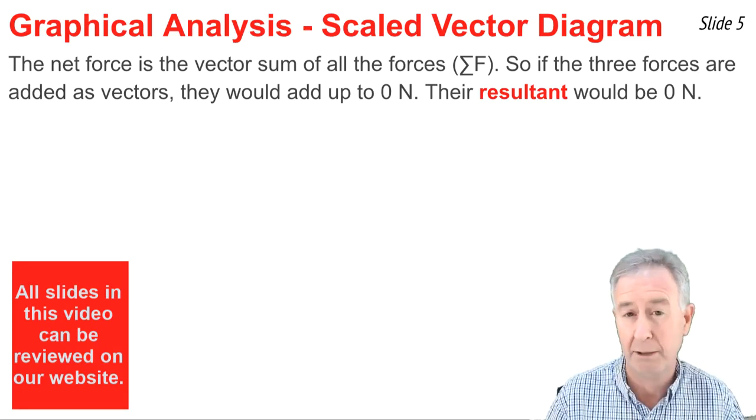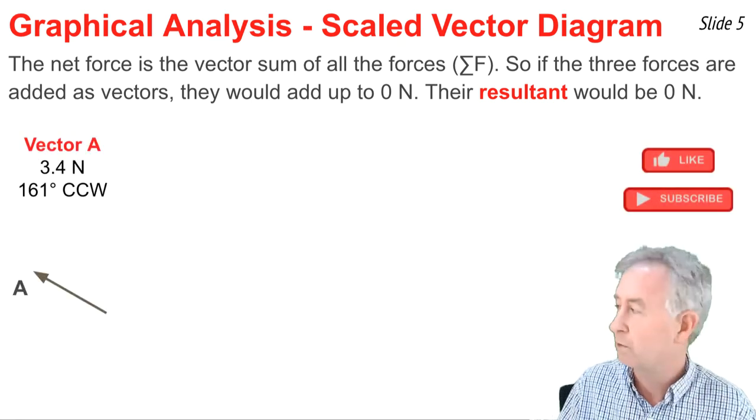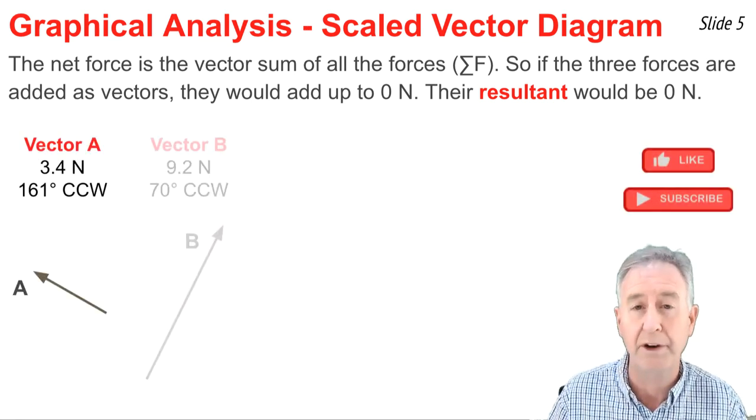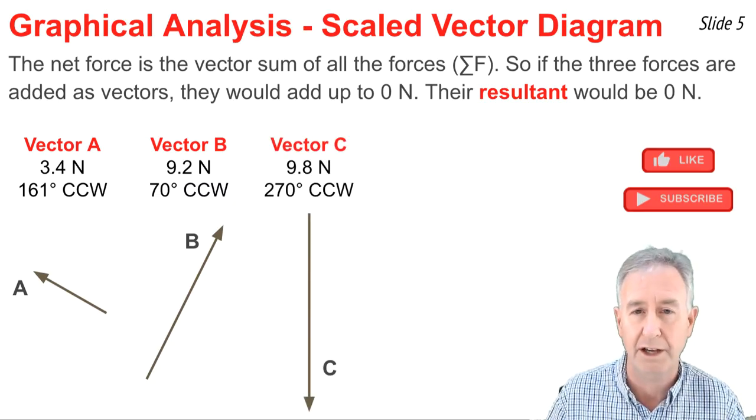That is, the vector sum or resultant of A plus B plus C would equal zero. So here's the first force, force A, in the second quadrant, force B in the first quadrant, and then force C, which was the force of gravity directed straight down.